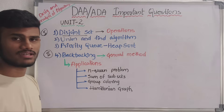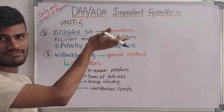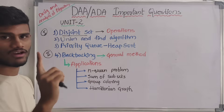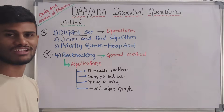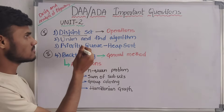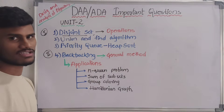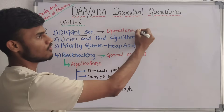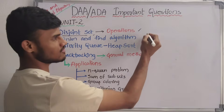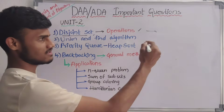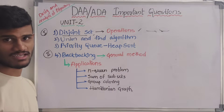Now coming to our second unit. In the second unit we have two parts. In the first part we have three questions, and in the second part we have only one question. The first part is completely of disjoint sets. In disjoint sets, we have three operations — you can use three operations.